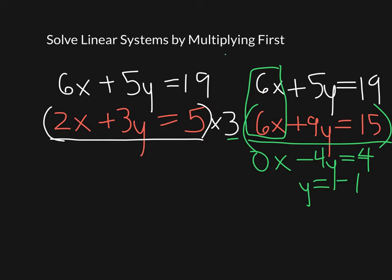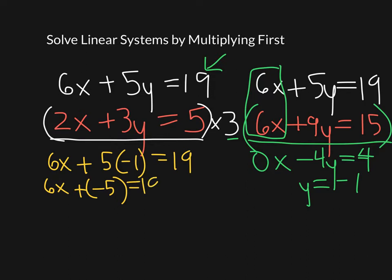I'm going to plug that in to this equation up here. When I do, I end up with 6x plus 5 times negative 1 equals 19. So 6x plus negative 5 equals 19. Add 5 to both sides. You get 6x equals 24. And then divide both sides by 6. You get x equals 4. So I believe I've got my point. My point that I believe is true is going to be 4 comma negative 1.